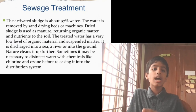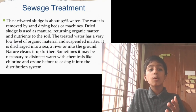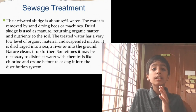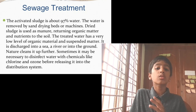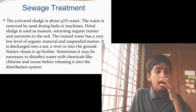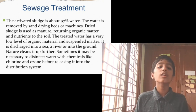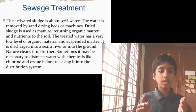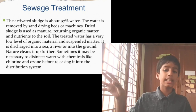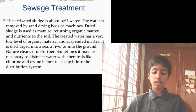The activated sludge is about 97% water. The water is removed by sand drying beds or machines. Dried sludge is used as manure, returning organic matter and nutrients to the soil. The treated water has very low levels of organic material and suspended matter, and is then discharged into sea or water bodies.